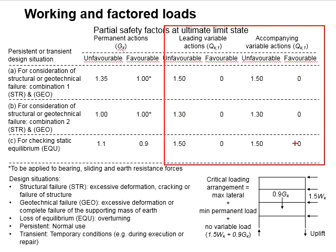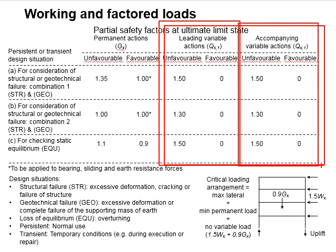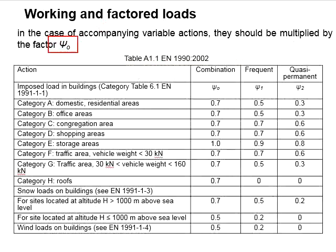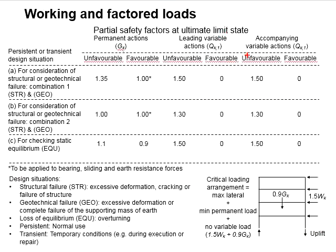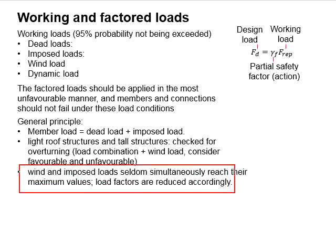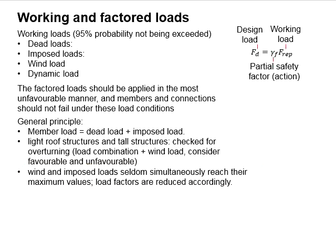Within the variable actions, there are leading variable actions and accompanying variable actions. The factors of safety for both are the same, except that the accompanying variable actions are multiplied with a reduction factor as given in the table. These reduction factors are normally less than 1.0, effectively reducing the magnitude of the accompanying variable actions. This is based on the principle that variable actions normally do not simultaneously reach their maximum value.